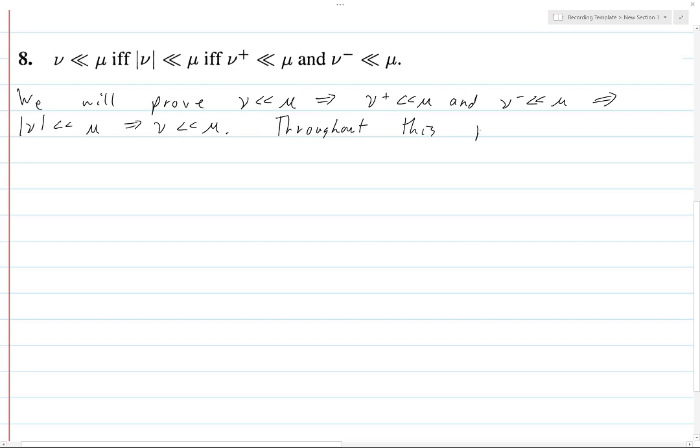Throughout this problem, let X equal P union N be a Hahn decomposition of ν with respect to μ, and E in our sigma algebra M such that μ of E is equal to zero. Because otherwise, every time I try to make a claim, I would have to restate that and it gets old really quickly.